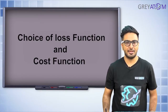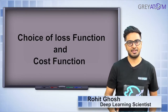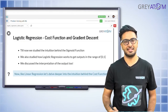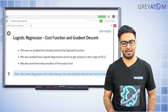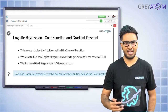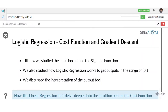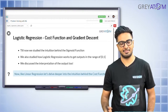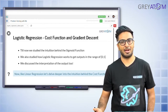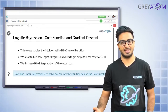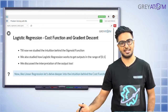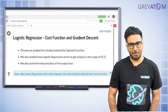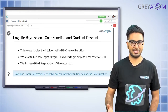We already looked at how logistic regression is modified from linear regression by fitting an S-curve instead of a linear regression line. Our predicted probability for an example belonging to class 1 is given by y-hat equals 1 divided by 1 plus e to the power of minus (θ₀ + θ₁x₁ + θ₂x₂ + ...).